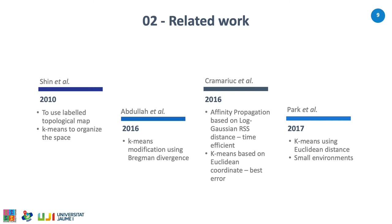Kramaryuk et al. stated that affinity propagation based on low Gaussian radio signal strength distance obtained the largest time reductions. In contrast, the k-means based on Euclidean coordinate distance obtained the best error. Parker et al. used k-means with Euclidean distance in the feature space for cluster information in a small environment, and the cluster determination in the online phase uses a probability distance.